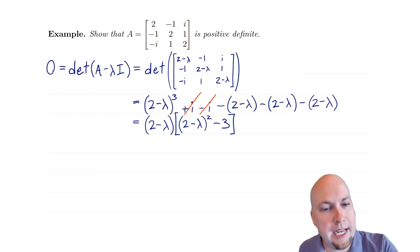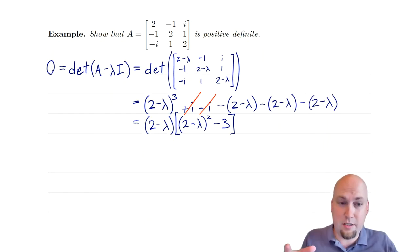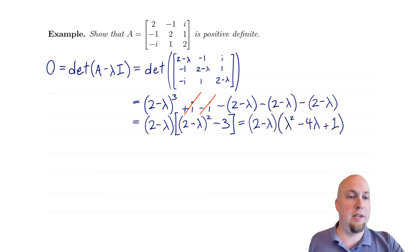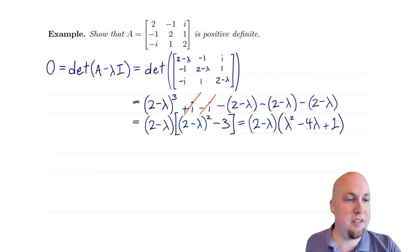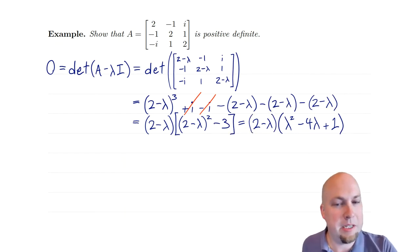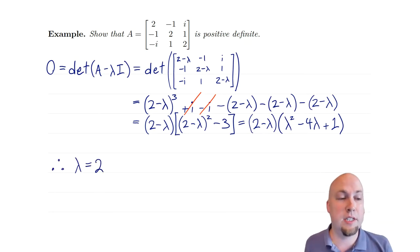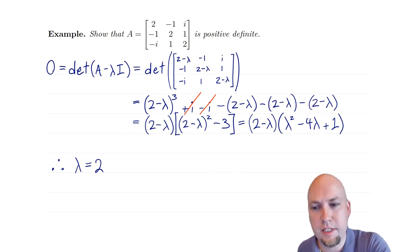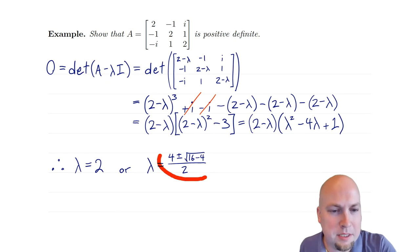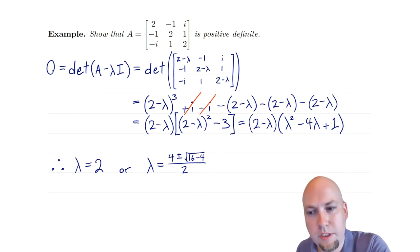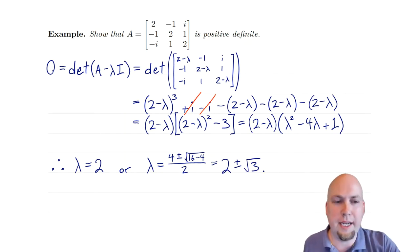So we've already got (2−λ) as a factor. I want to expand the remaining bracket as a quadratic. If you expand and simplify, you get λ²−4λ+1. Now to find the roots: λ=2 is one eigenvalue. The other two come from the quadratic formula applied to λ²−4λ+1, which gives λ = (4 ± √(16−4))/2, simplifying to 2 ± √3.